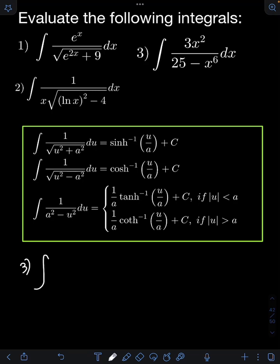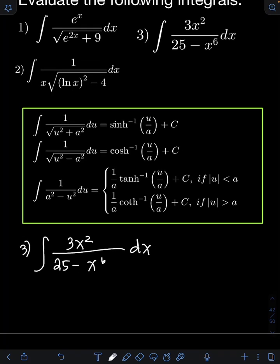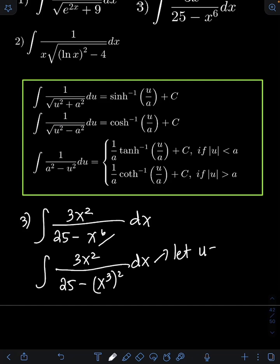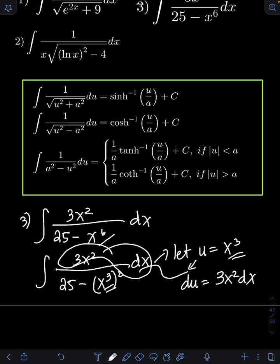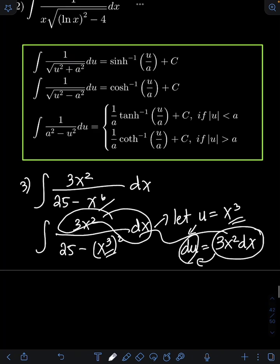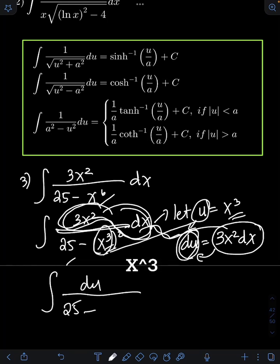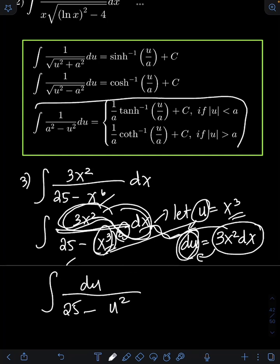For number 3, we have the integral of 3x² over (25 − x⁶) dx. Rewriting the integral, x⁶ can be written as (x³)² by the law of exponents. From this form, we let u equal x³. Getting the derivative of both sides: du equals 3x² dx by the power rule. Notice we have the term 3x² dx on the original integral, which now equals du. Substituting gives du over (25 − u²), which resembles this form.